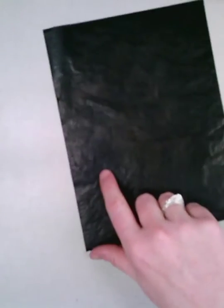Now, your carbon paper, there's a shiny side and a dull side. The shiny side has to go down on the magnet.